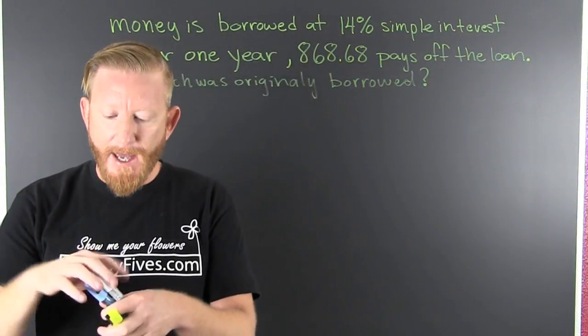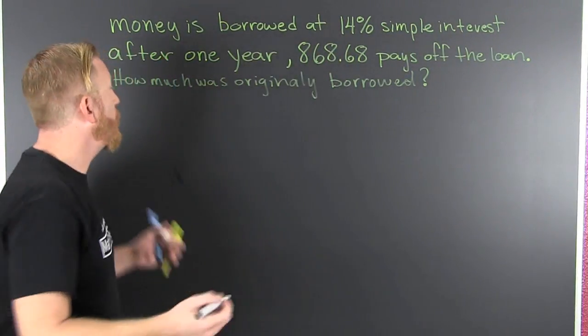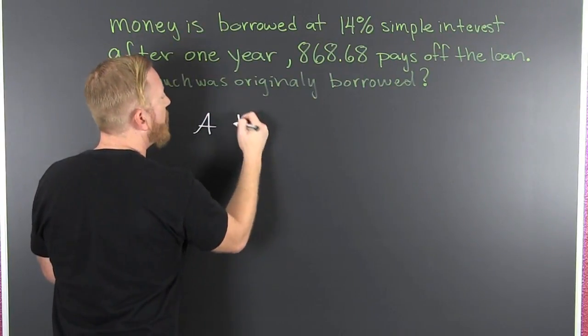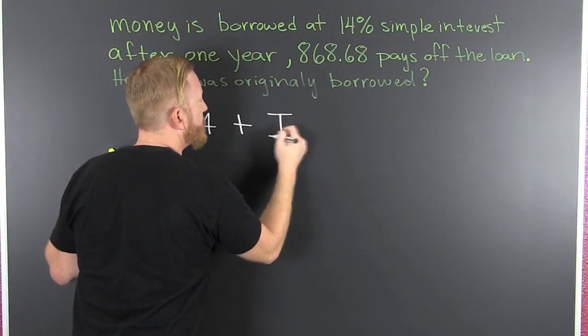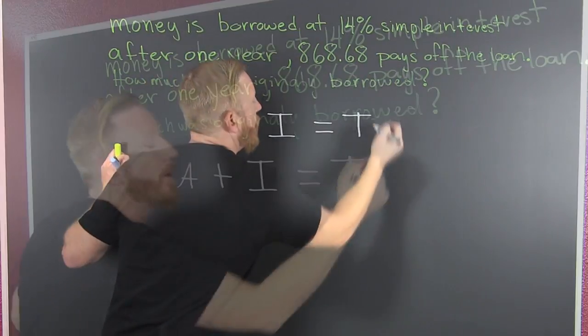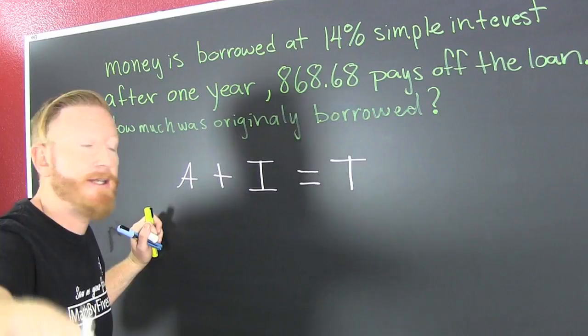If we're looking at this, what do we want? We want the amount borrowed plus the interest. That's going to be equal to the total. Oh sure. This is a linear equation.